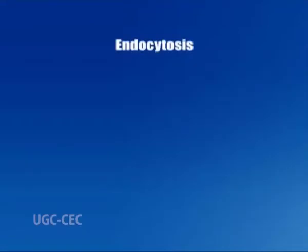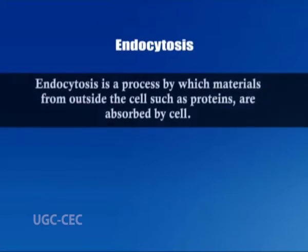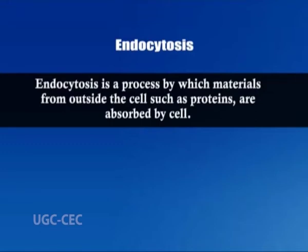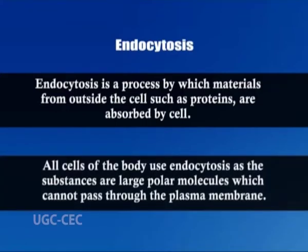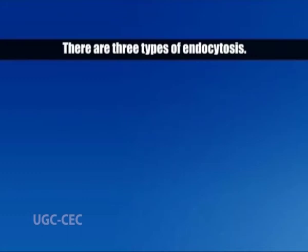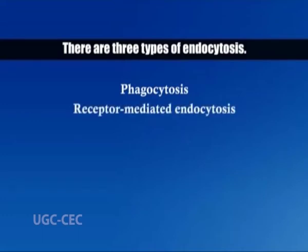The third route is endocytosis — a process by which materials from outside the cell, such as proteins, are absorbed by the cell. All cells of the body use endocytosis, as these substances are large polar molecules which cannot pass through the plasma membrane. There are three types of endocytosis: phagocytosis, receptor-mediated endocytosis, and pinocytosis.